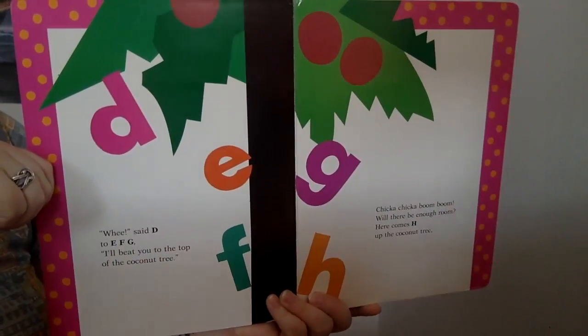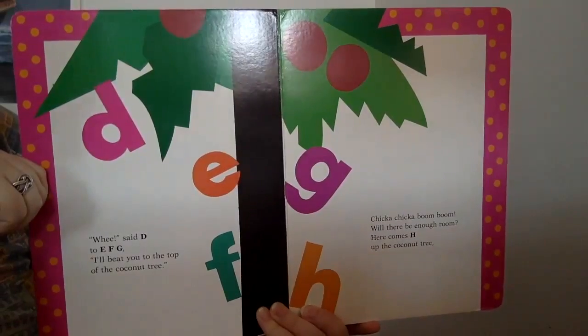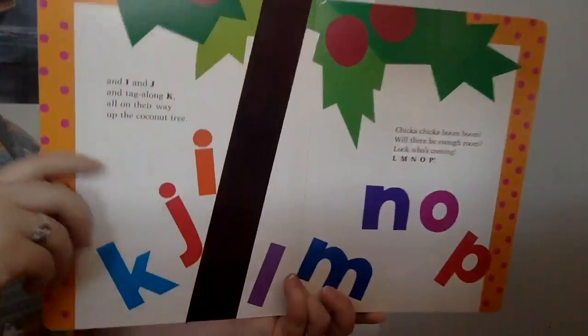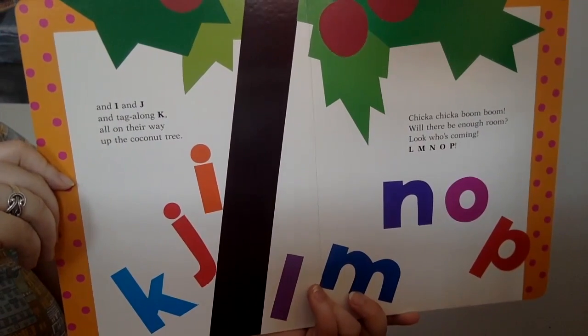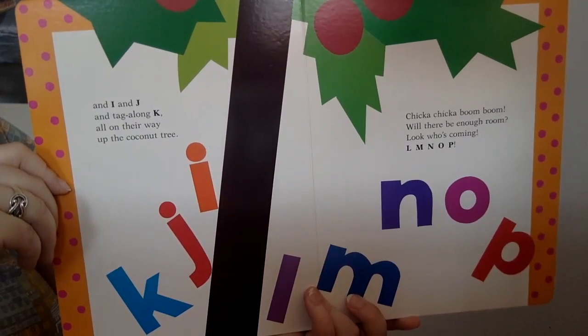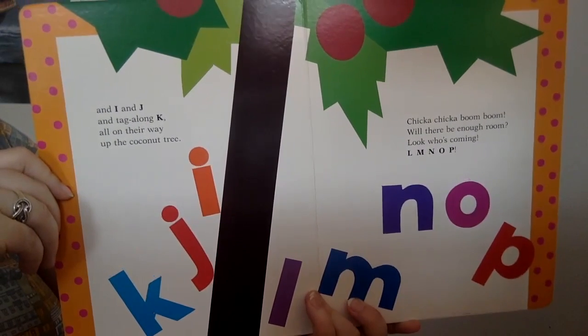Chicka Chicka Boom Boom, will there be enough room? Here comes H up the coconut tree. And I and J and Tagalong K all on their way up the coconut tree. Chicka Chicka Boom Boom, will there be enough room?